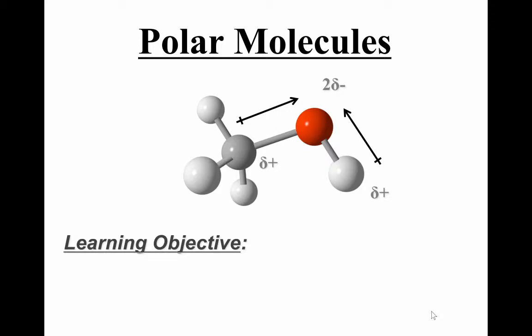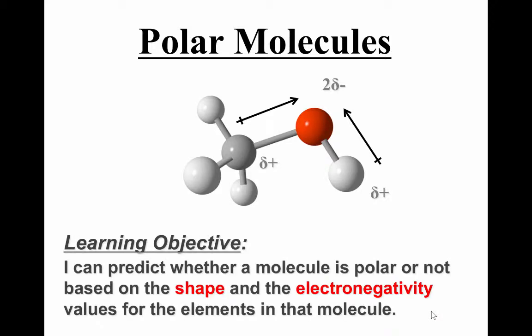And now we're going to learn what makes a molecule polar. Now we've already talked about polar bonds and we've learned that in a polar bond there's unequal sharing of electrons. But in this lesson, we're going to build on that. After this lesson, you will be able to predict whether a molecule is polar or not based on two important factors: the shape of the molecule and the electronegativities for the elements that are bonding.